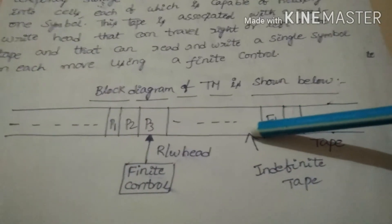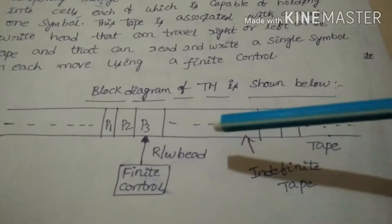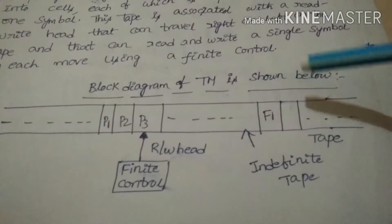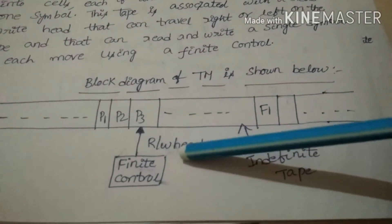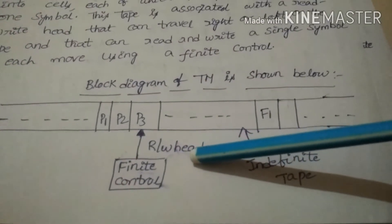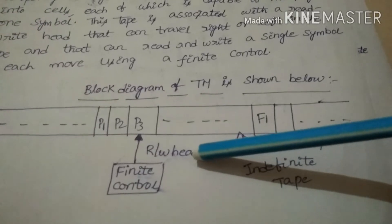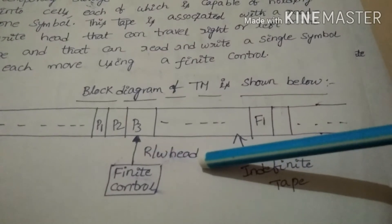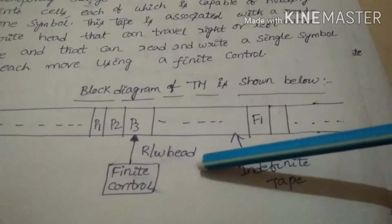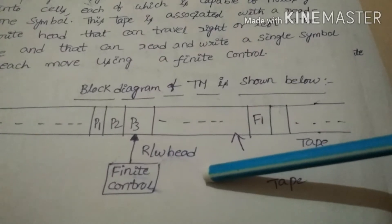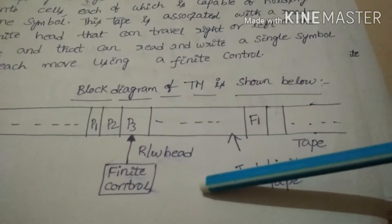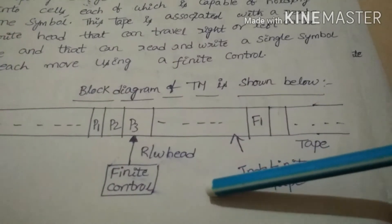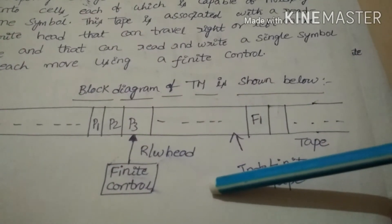In this Turing machine block diagram, we have cells P1, P2, P3, and so on, up to F1. This is the finite control and read-write head. It consists of a finite number of states, and it is said to be in a particular state at any given time. This state can be initial, final, or halt. It basically consists of a one-dimensional tape that is divided into a number of cells. This tape is of indefinite length and is used to store data inside it.